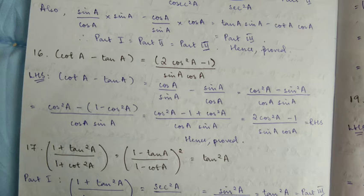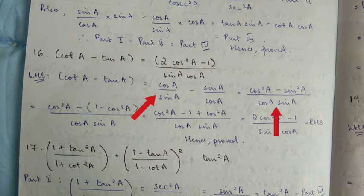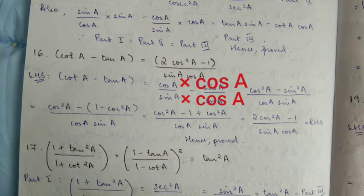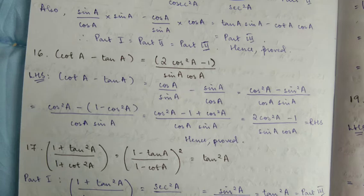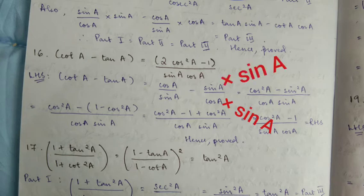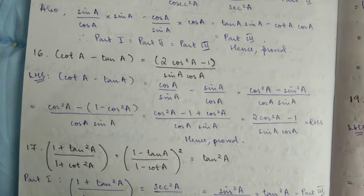Next, question number 16. cot A minus tan A — cot A is cos A by sin A, tan A is sin A by cos A. Take LCM. LCM of the denominator: multiply sin A cos A. So cos A — sin A run. Numerator terms with denominator sin A, so cos A sin A. And sin A — cos sin.